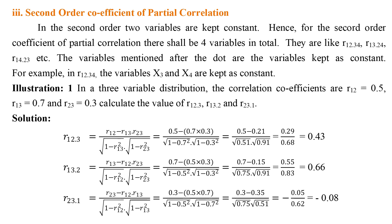Illustration 1: In a three-variable distribution, the correlation coefficients are r12 = 0.5, r13 = 0.7, and r23 = 0.3. Calculate the values of r12.3, r13.2, and r23.1.